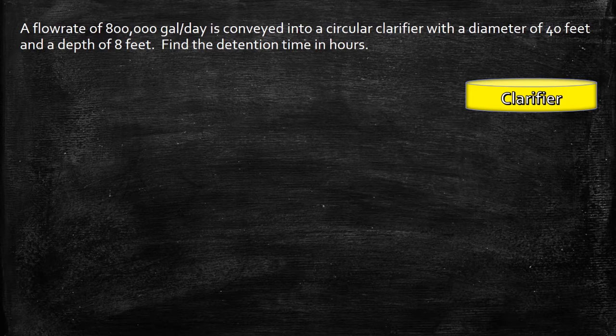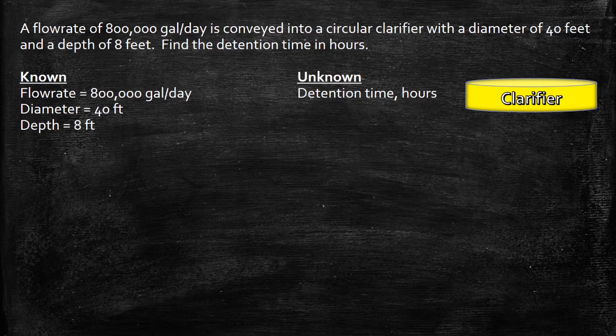First, write down all the knowns and the unknown. We're given the flow rate, diameter, and depth. And for the unknown, they're asking for the detention time in hours.